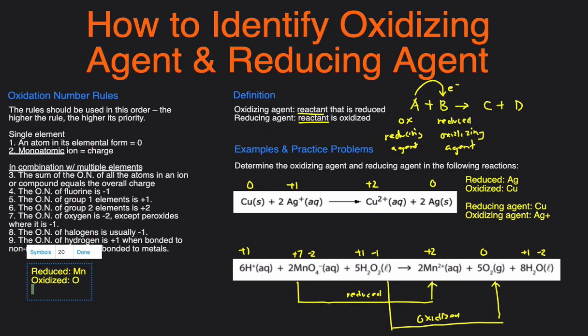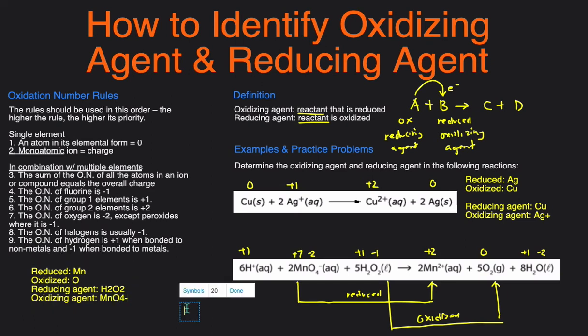Then the agents are just the opposite. So reducing agent is going to be the reactant that contains the oxygen, and that'll be the H2O2, and then the oxidizing agent is the reactant that contains the element that was reduced. So that'll just be MnO4-. Once again, the agents, they have to be the entire reactant that contains those elements. So hopefully that made some sense.